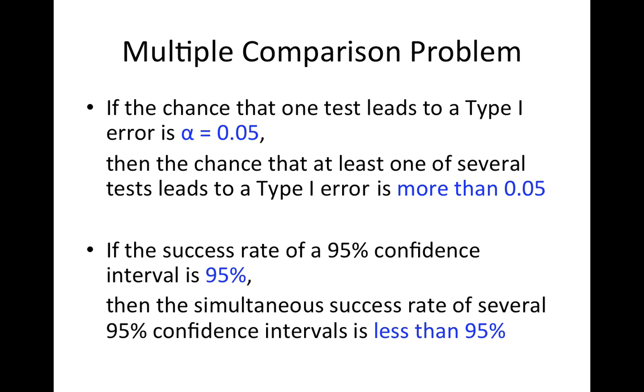Here's the multiple comparison problem. Suppose I conduct one test, and the Type I error rate of that test is 0.05, and we typically call that alpha.